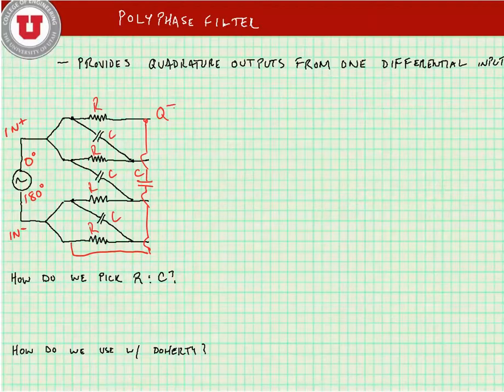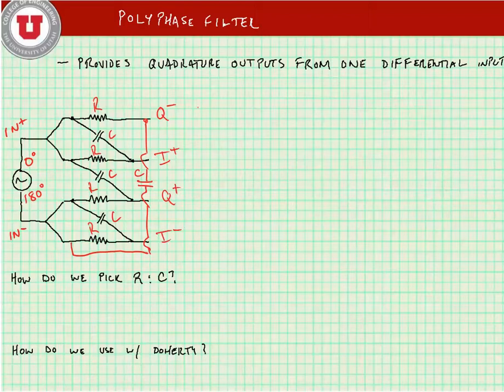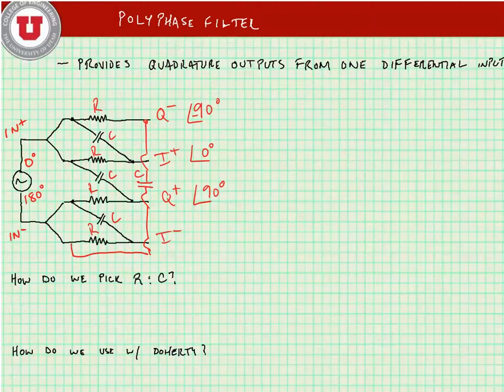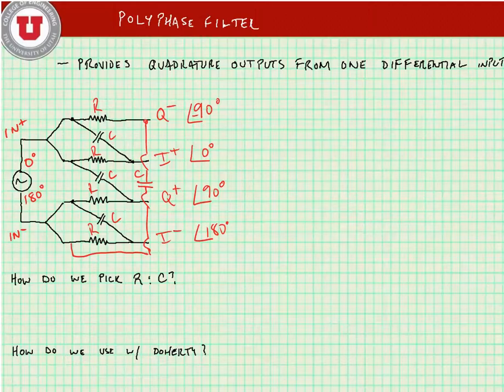To close the loop, we size these things appropriately. We're going to get a Q minus phase, an I plus phase, a Q plus phase, and an I minus phase. The signal will have the following phasing: Q minus will be minus 90 degrees, Q plus will be plus 90 degrees, I plus will be zero degrees, and I minus will be 180 degrees.